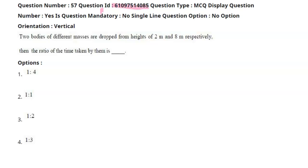Let's come to the question. Two bodies of different masses are dropped from heights of 2 meters and 8 meters respectively. Find the ratio of the time taken by them.